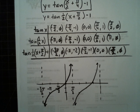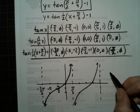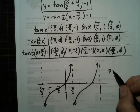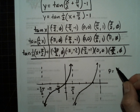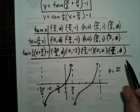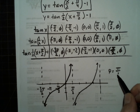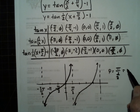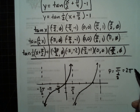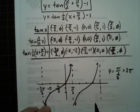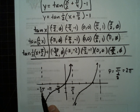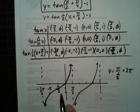Remember that the period is pi over b, and b is a half in this problem, so the period is 2 pi. And we see that from negative 3 pi over 2 up to pi over 2 is 2 pi.